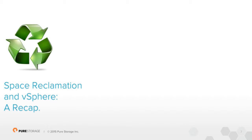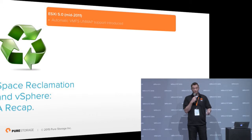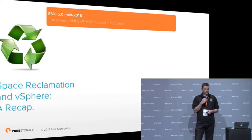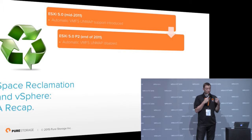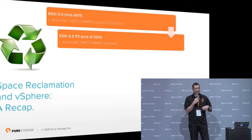So let's go over the history of UnMap in VMware. UnMap was initially introduced in 5.0 as an automatic procedure — you deleted a virtual machine, you moved a virtual machine, ESX would issue UnMap to the underlying storage and reclaim that space. This caused some problems though. There were performance issues with arrays that could support UnMap, causing overall performance issues with any I/O going to that array. Therefore VMware ended up disabling that automatic UnMap procedure and made an option called Enable Block Delete that allowed you to turn automatic UnMap on or off.